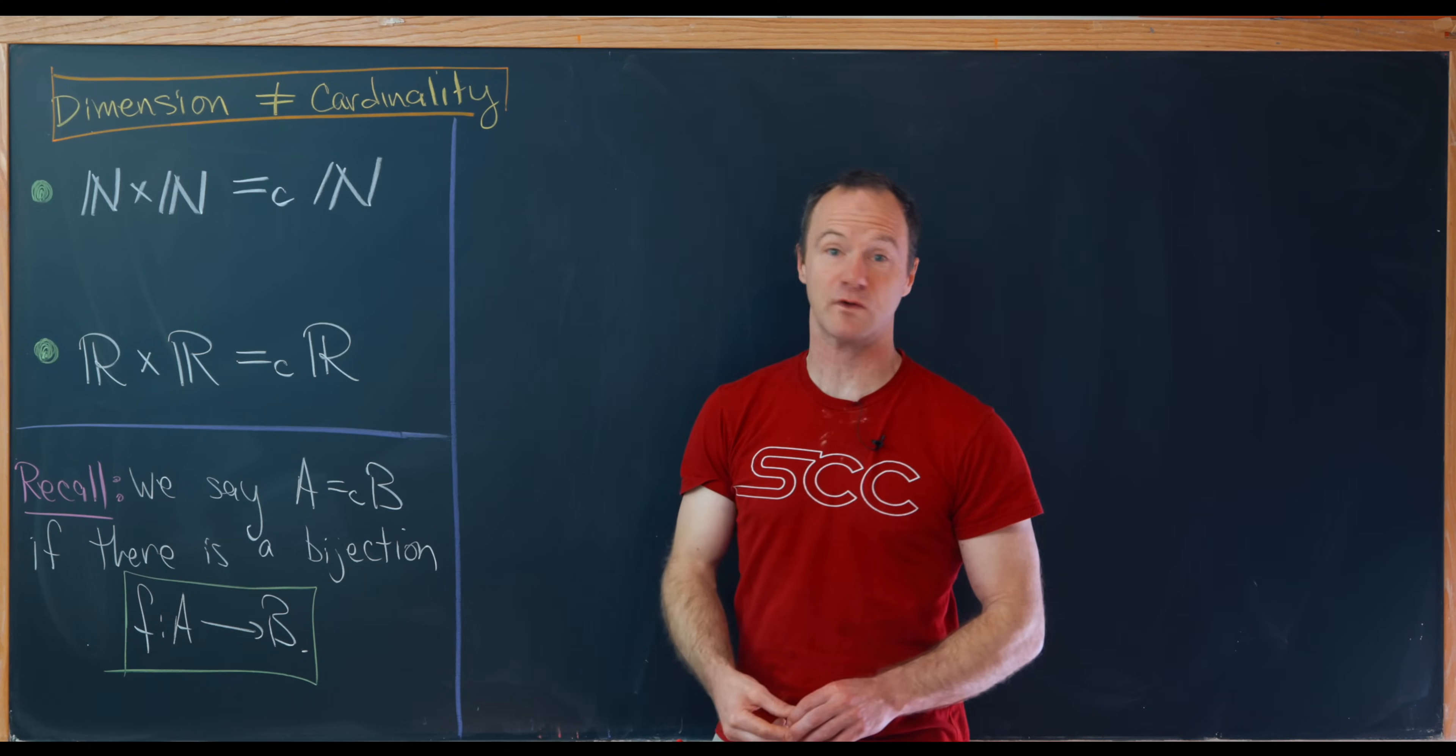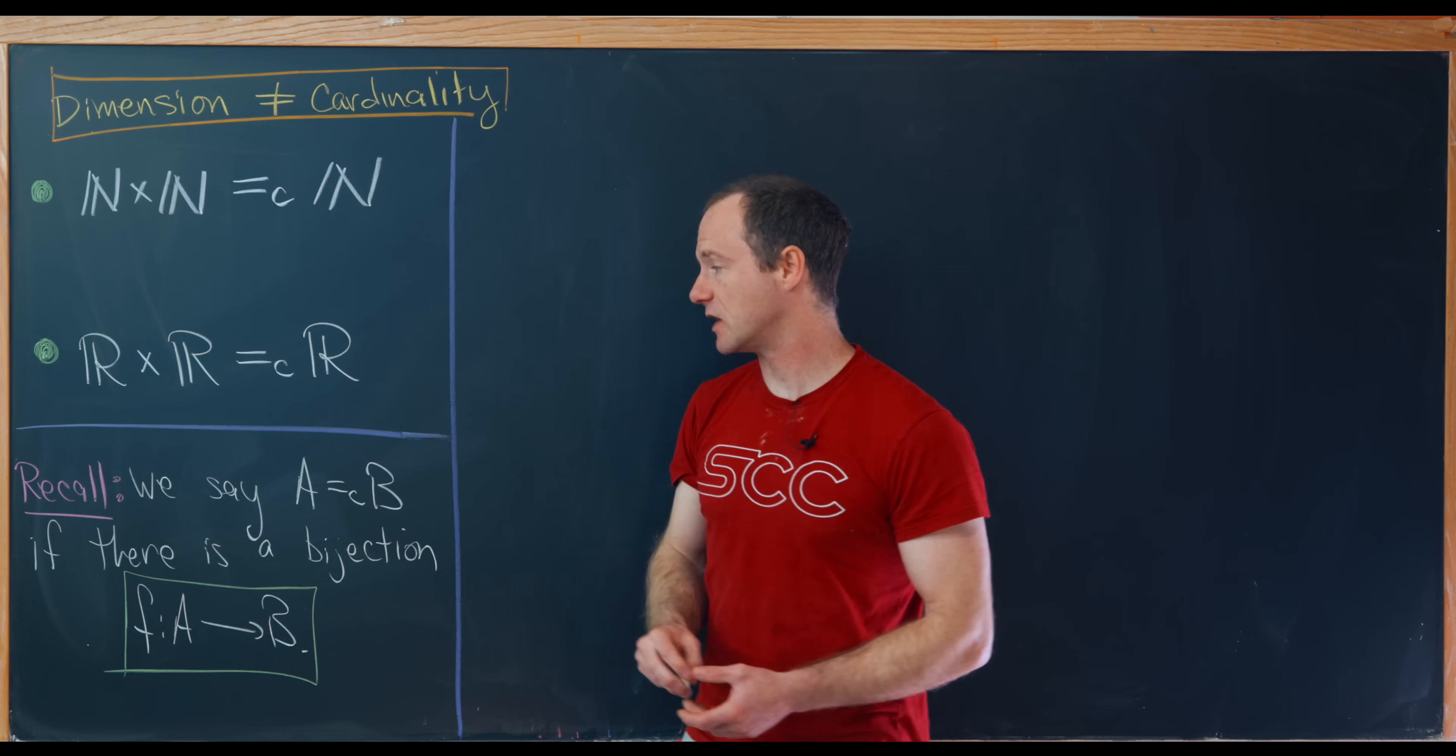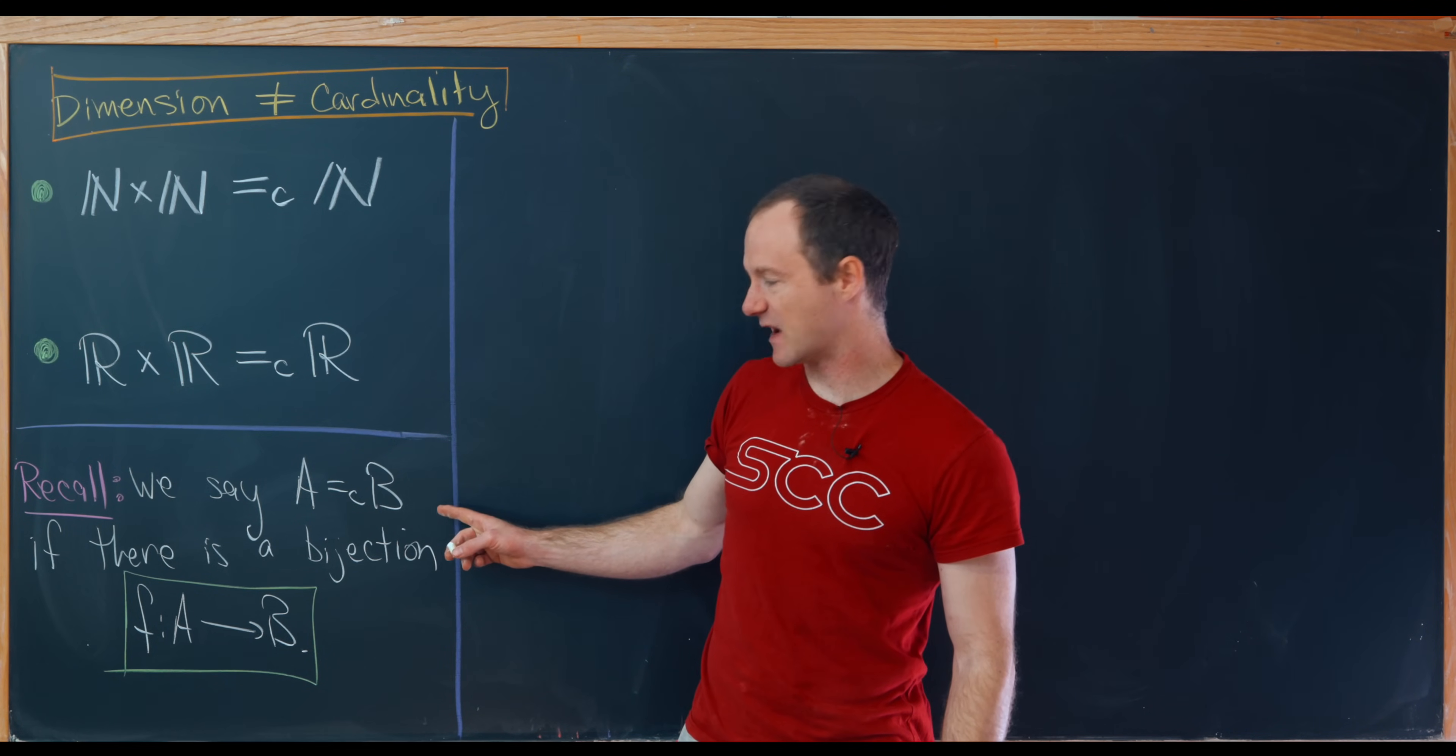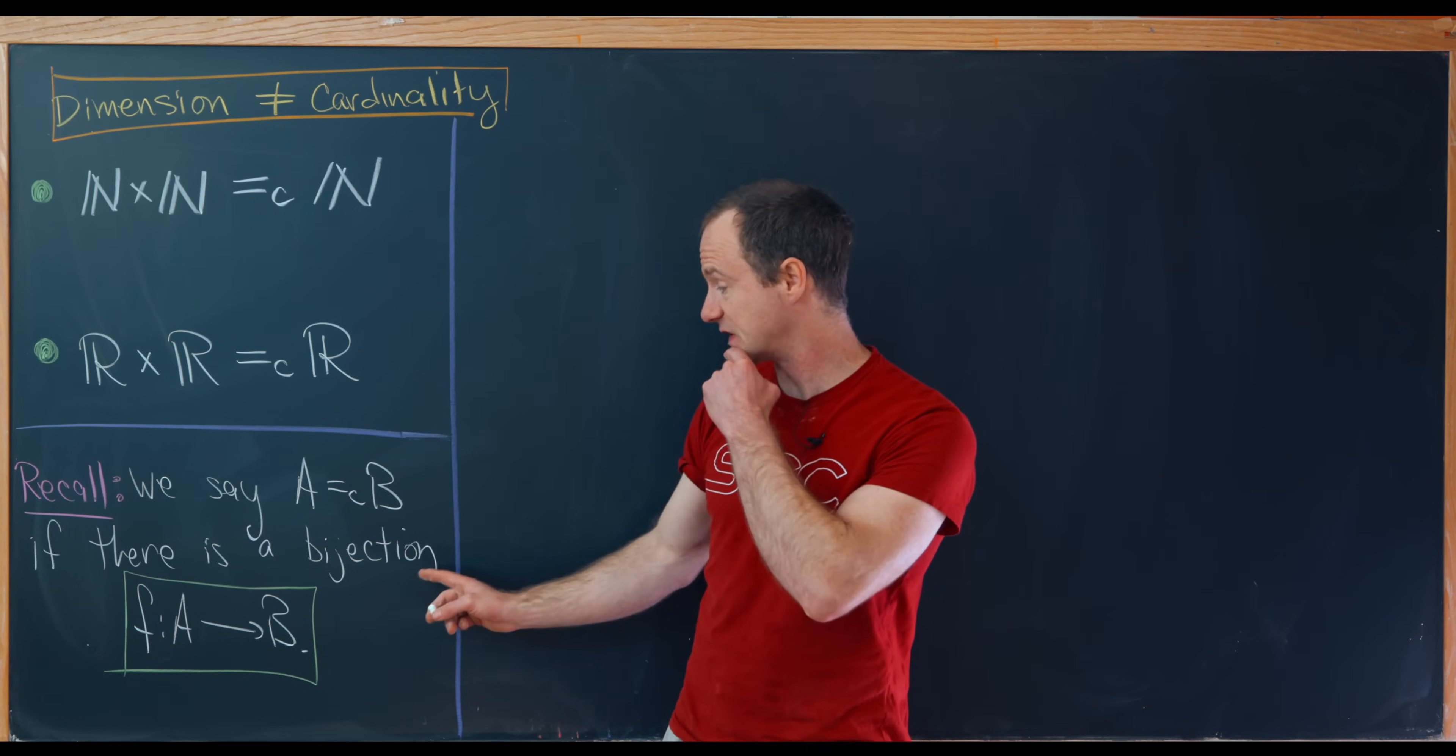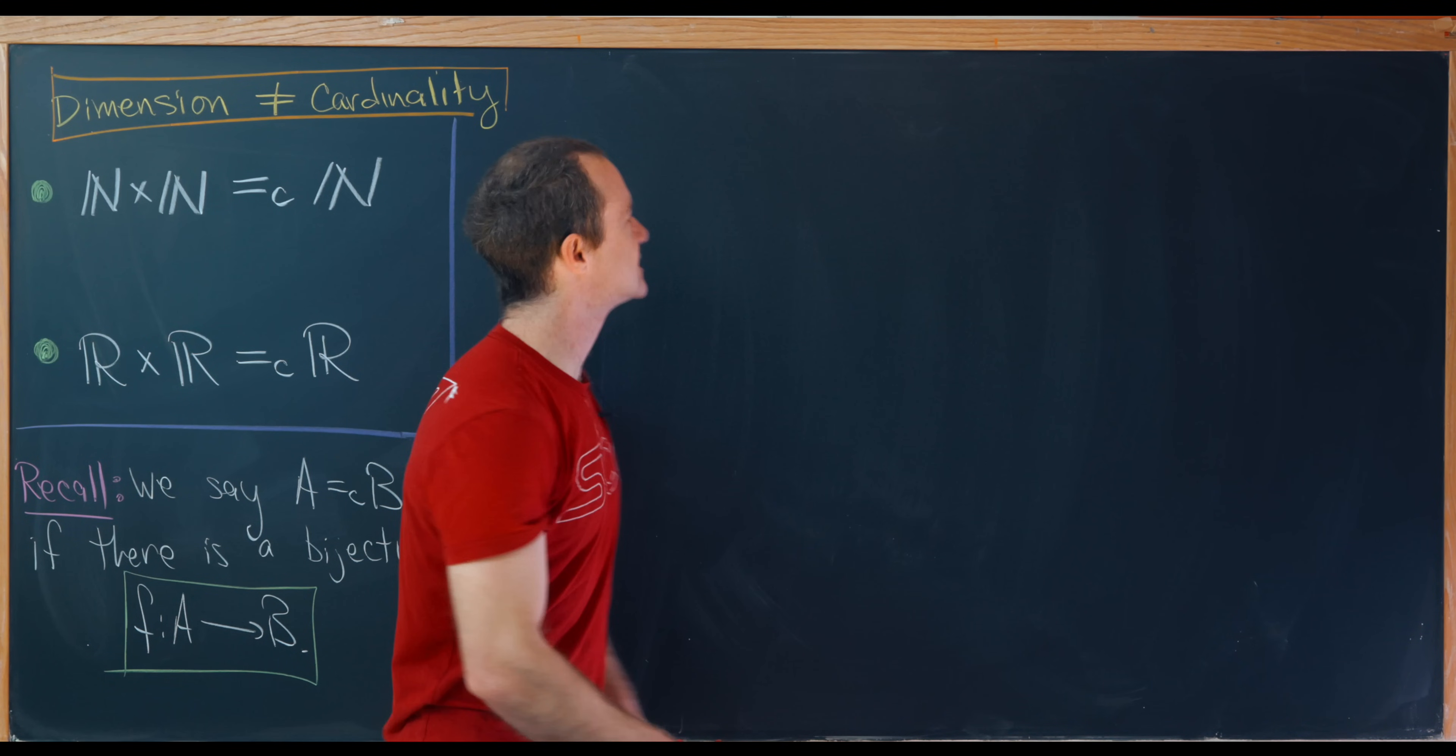And this really drives home this idea. Because I think we could all agree that the real plane R² or R cross R is two-dimensional, whereas the real line R is only one-dimensional, yet they are equal in cardinality. And we'll show two sets are equal in cardinality or equinumerous using the following fact: Really equinumerous or equal in cardinality if there is a bijection f from A to B. So in this first case we'll construct an explicit bijection.